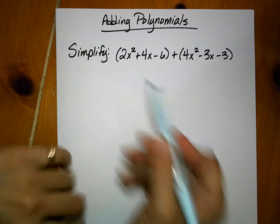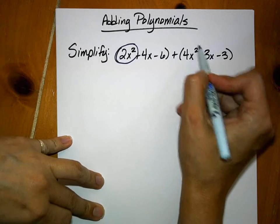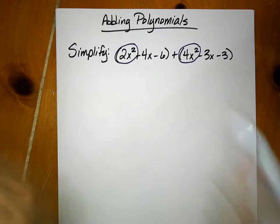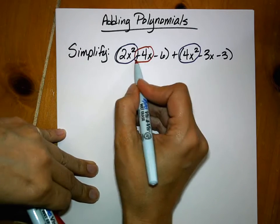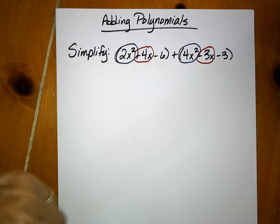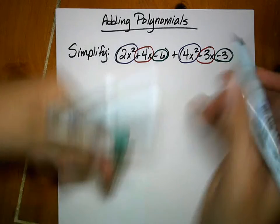So we can literally just look for like terms and do what I did before. So these are both x squared terms. They can be added together. These are both x terms. Notice it's a positive 4x. I kind of crossed it out there. And this is a negative 3x. They can be added together and then our constants are a negative 6 and a negative 3.